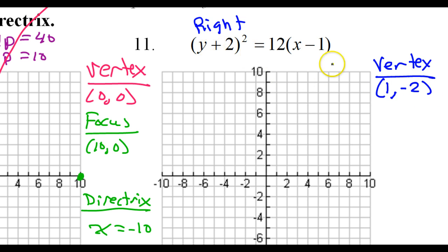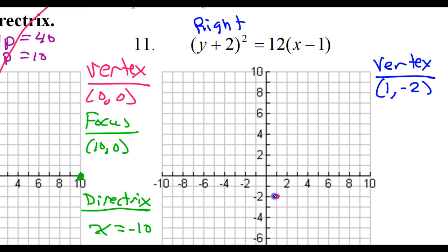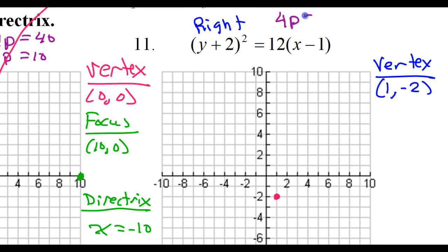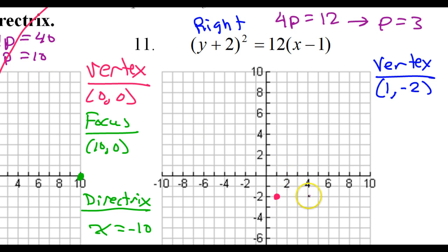The y part gives me the y value, so I have a vertex at 1 comma negative 2. Now let's find the p value: 4p is equal to 12, which means p is equal to 3. So I'm going to go 3 to the right — 1, 2, 3 — so there's my focus. That's 4 comma negative 2. Meanwhile, the directrix should be 3 in the opposite direction.